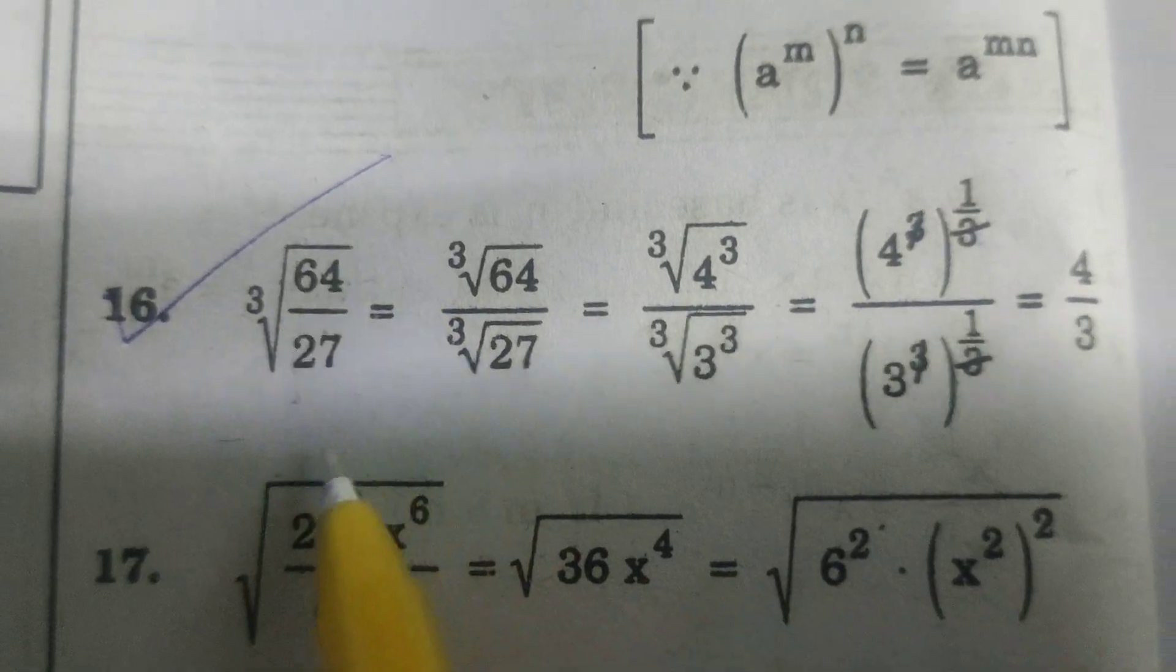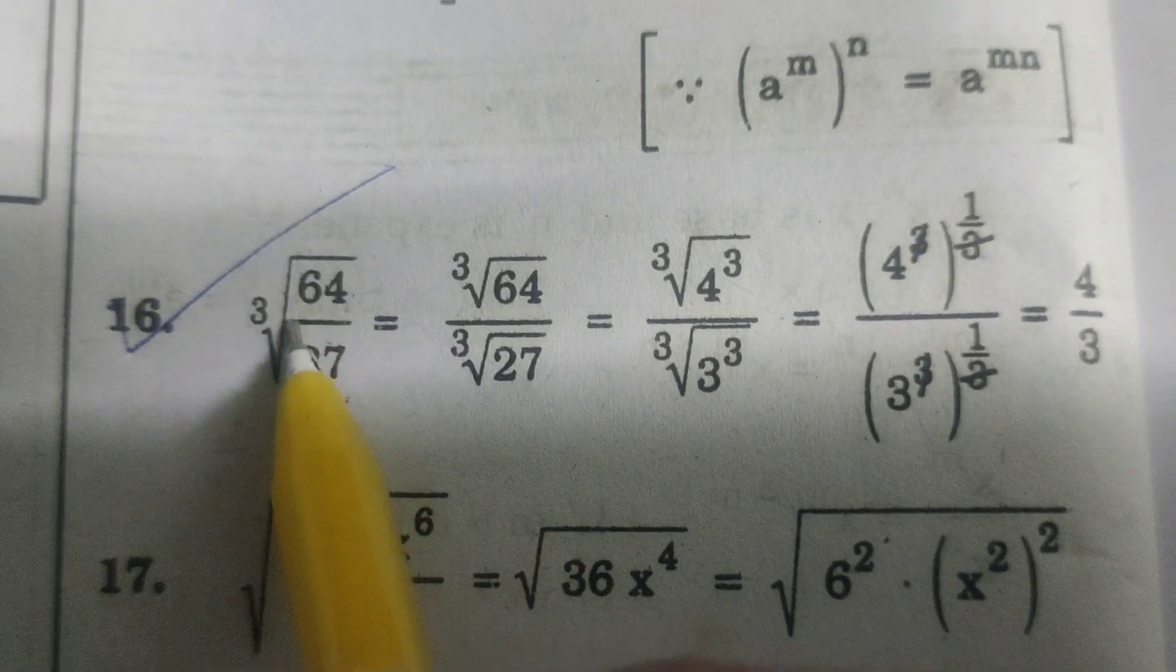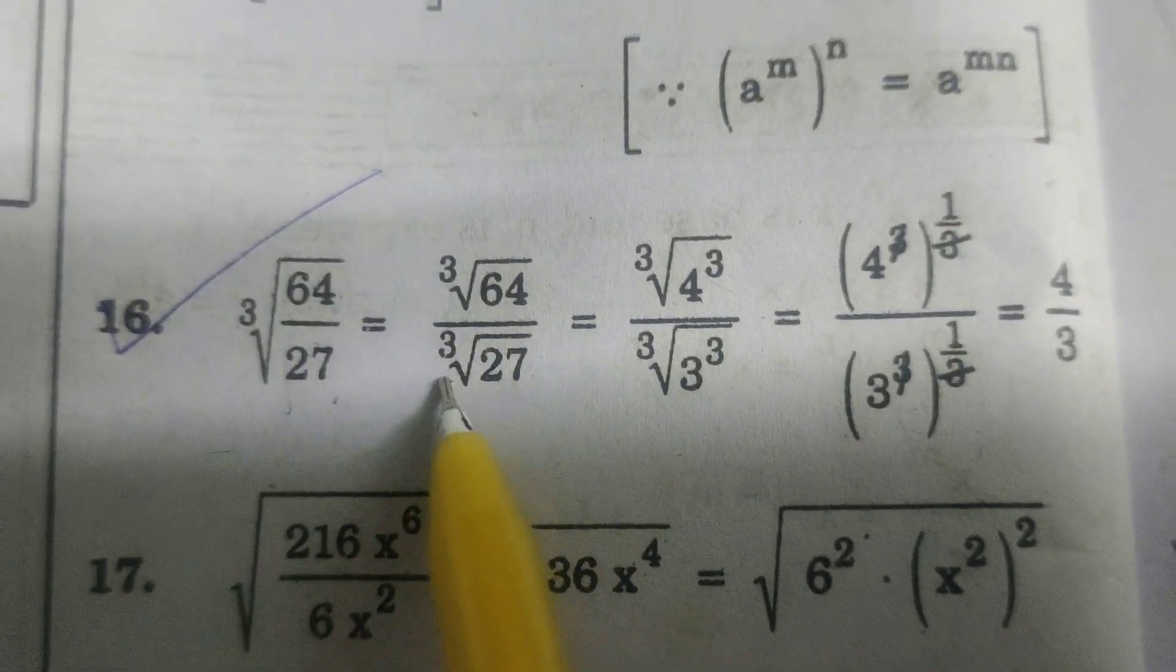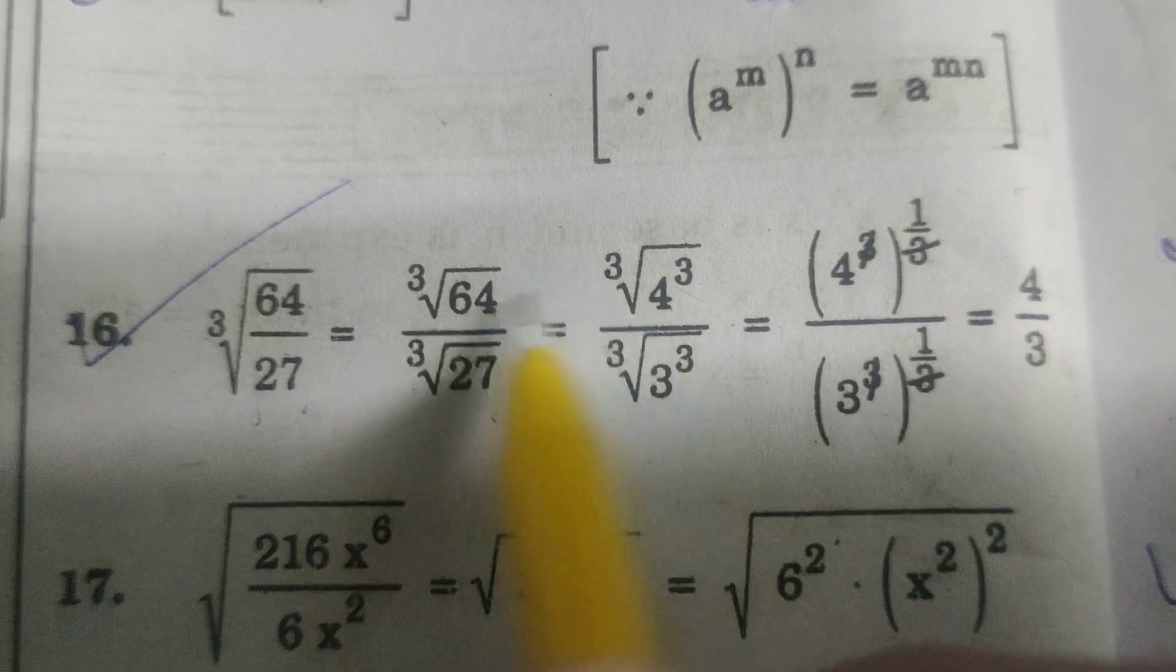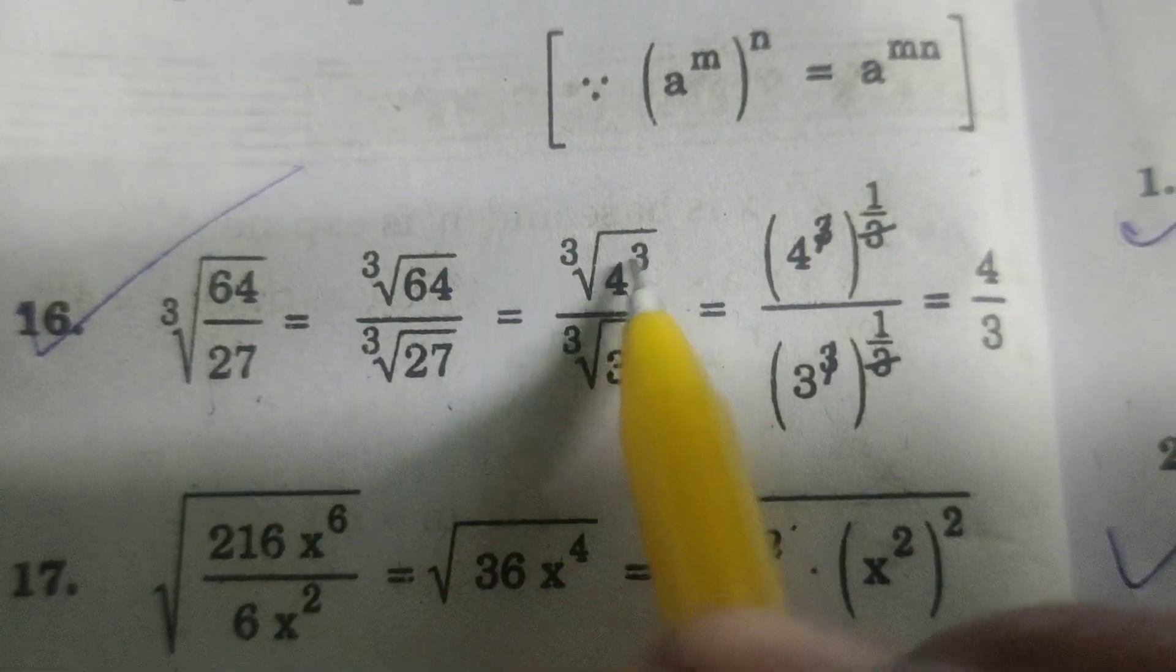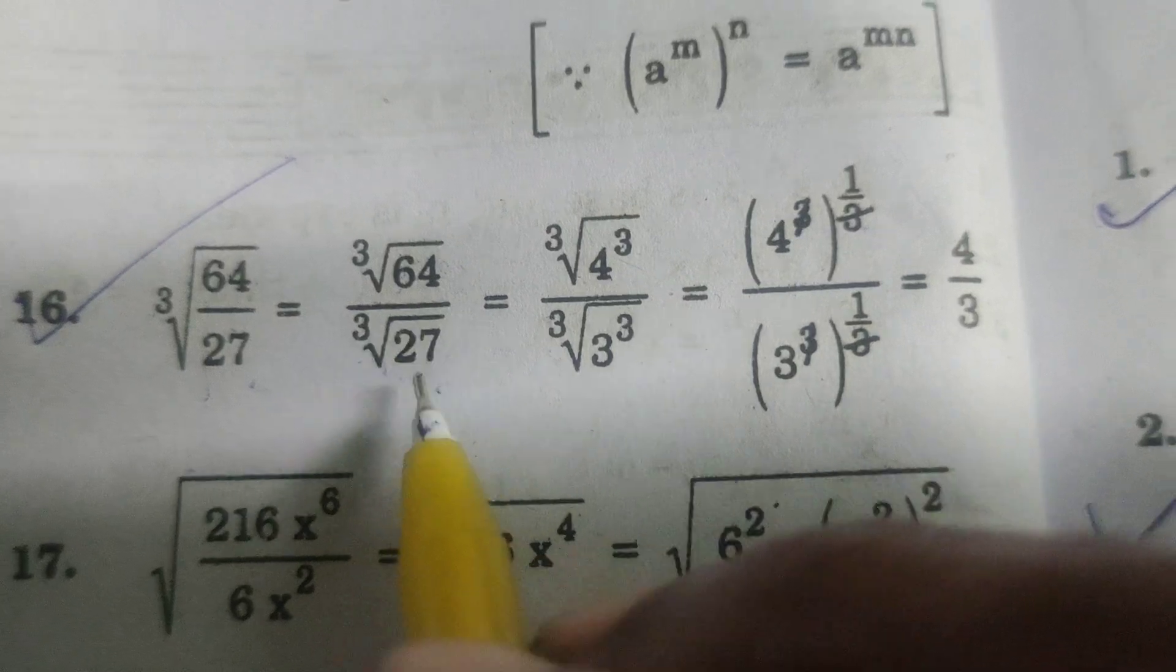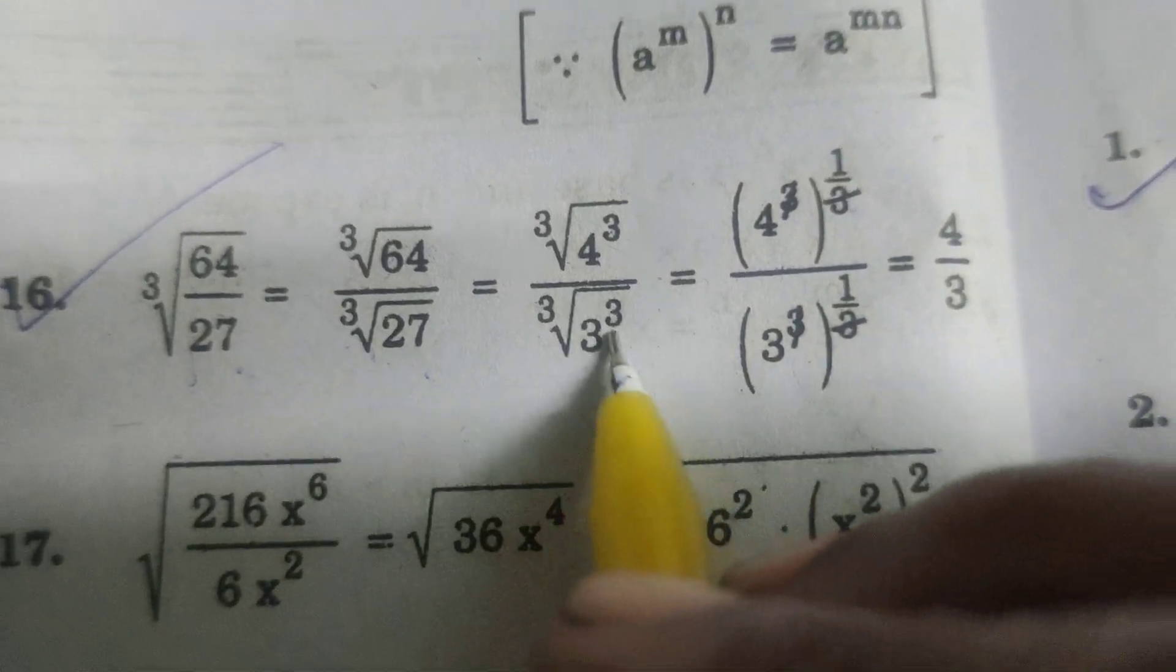3 root of 64 by 27. That is 3 root 64 by 3 root 27. 3 root 64 is 4 cube, 3 root 27 is 3 cube.